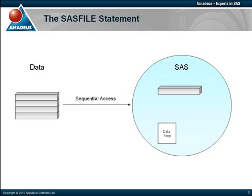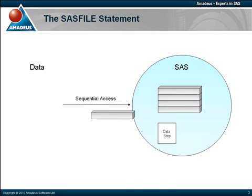This is where SAS accesses data held on disk and reads it into memory. Data is then typically processed within our data steps and we usually write them out to a new data set prior to being released from memory. This process is iterative — it is repeated for each row of data, working through the data set one record at a time. And clearly the number of observations in our data set will dictate the number of input output requests processed, which will have an impact on processing time.